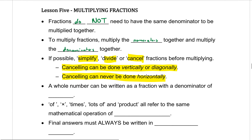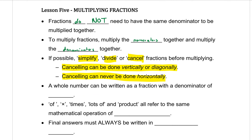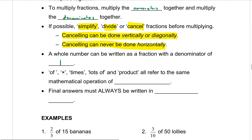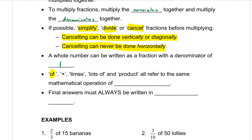A whole number can be written as a fraction with a denominator of one — we've seen that already. Anytime there's a whole number, you always put it over one. The word 'of' means to multiply, or to times, or lots of. 'Of', times sign, times, lots of, product — all of those things mean multiplication. Final answers must always be written in simplest form.